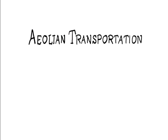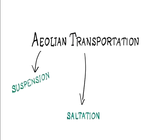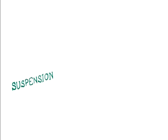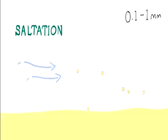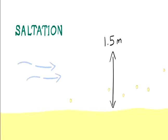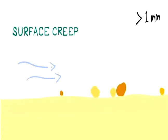The wind transports material in three ways: suspension, saltation, and surface creep. Very fine sand suspended in the wind can be carried for hundreds or even thousands of miles. Saltation involves particles between 0.1 and 1 millimeter in size bouncing along the ground up to 1.5 meters high. Surface creep involves larger particles — those bigger than 1 millimeter in diameter — that are too heavy to be lifted; they are pushed and rolled along the ground.